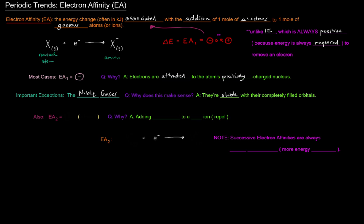Furthermore, electron affinity number two is always positive, which means it always requires energy to add a second electron. Why would that be? Well, because the product of the electron affinity reaction is an anion, so you're going to be adding a negatively charged species to a negative ion, and those things will repel. So electron affinity two starts with a negatively charged ion, adds an electron, and produces an ion with a negative two charge — that would require energy.